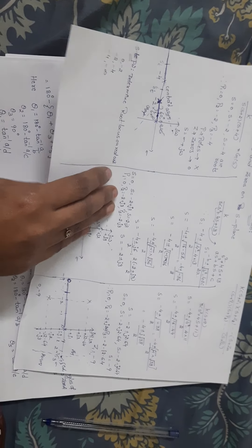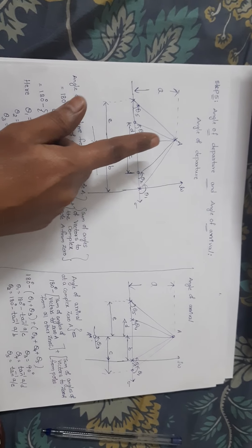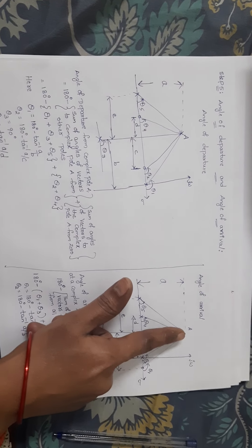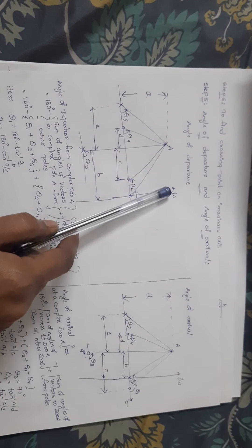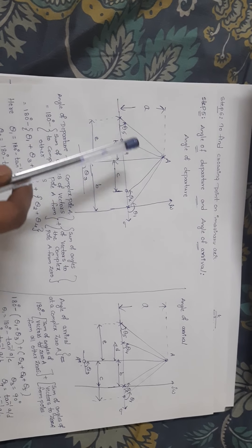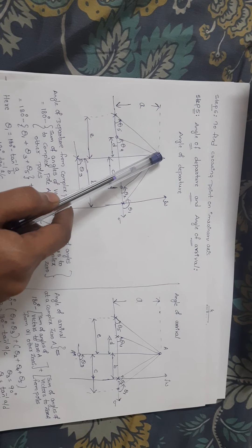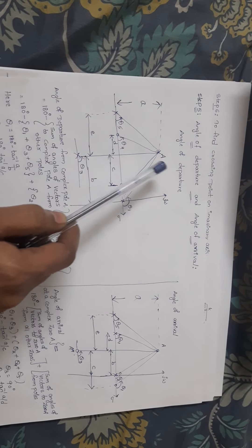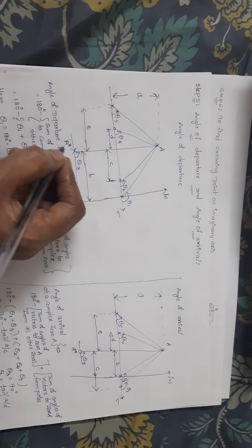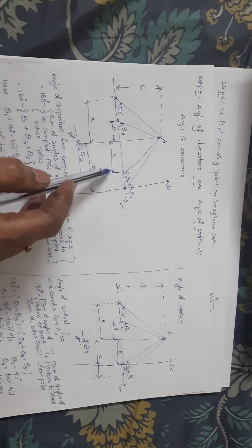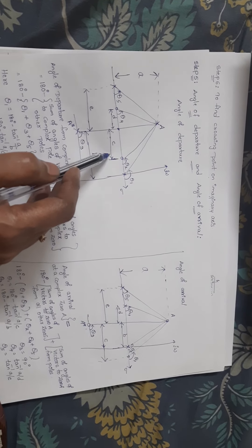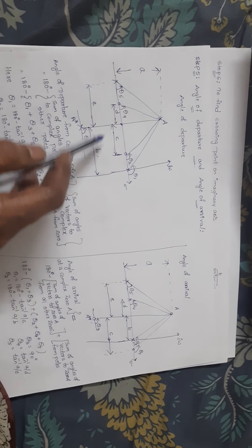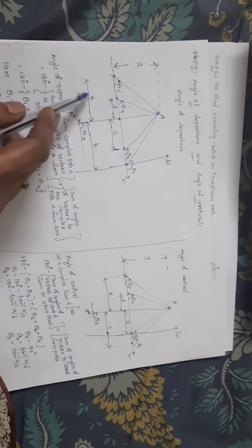Let us see what is meant by angle of departure and angle of arrival. Angle of departure is for complex conjugate poles, and angle of arrival is for complex conjugate zeros. In the s-plane with sigma and j-omega axes, for complex conjugate poles — name them A and A-star — you draw lines from all other poles and zeros on the real axis to this pole, and indicate the distances: B, C, D, and E.